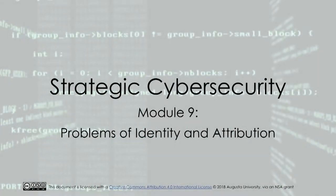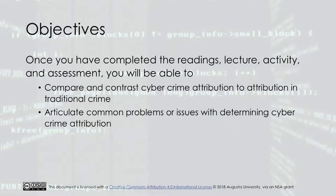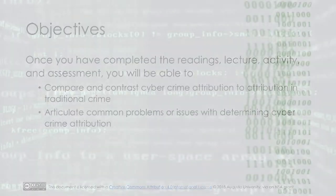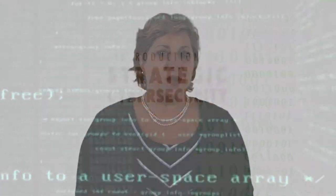Strategic Cybersecurity Module 9: Problems of Identity and Attribution. Once you have completed the readings, lecture, activity, and assessment, you will be able to compare and contrast cybercrime attribution to attribution in traditional crime, and articulate three common problems or issues with determining cybercrime attribution. Welcome to Strategic Cybersecurity Module 9, where we will discuss the problem of determining identity and attribution on the internet.